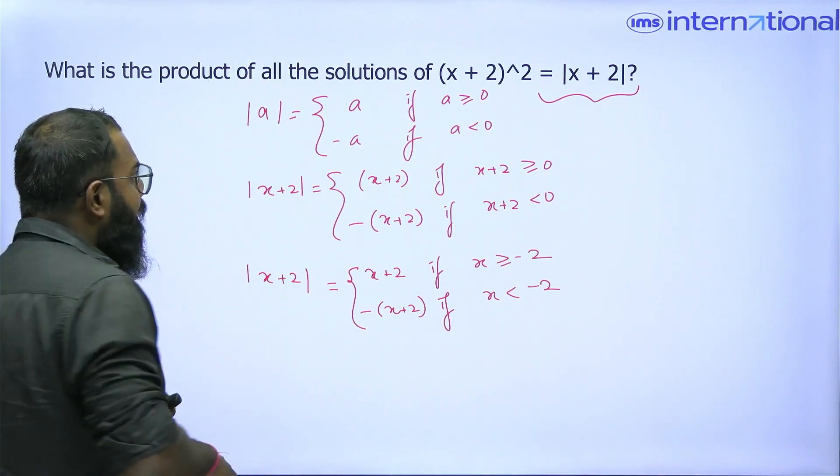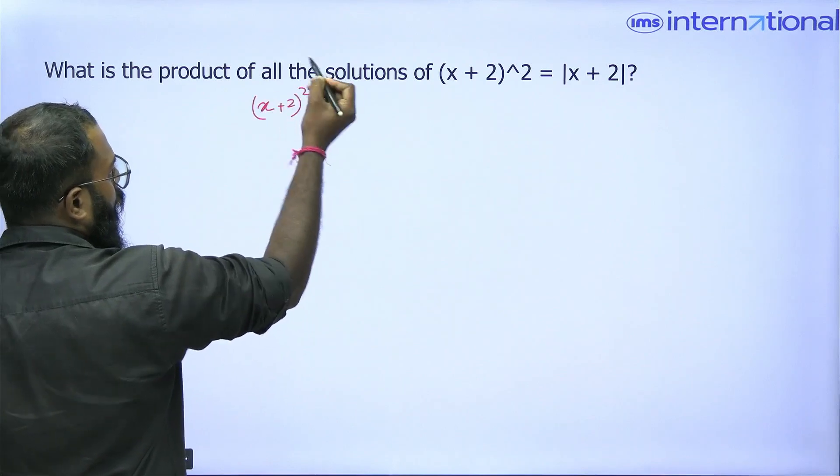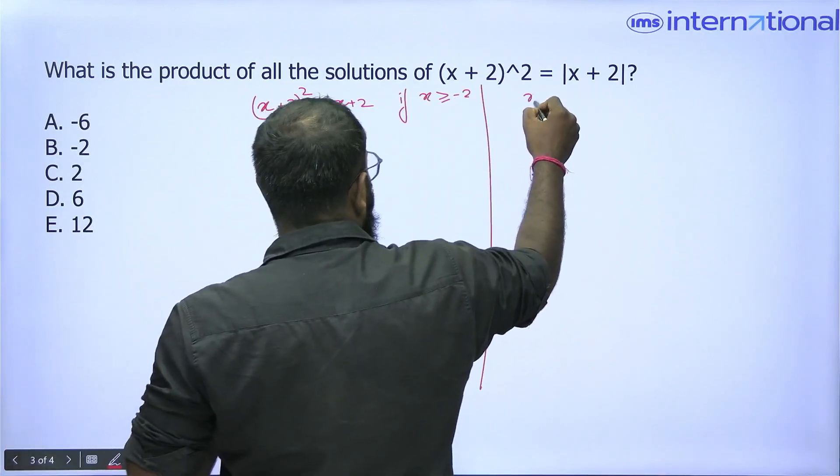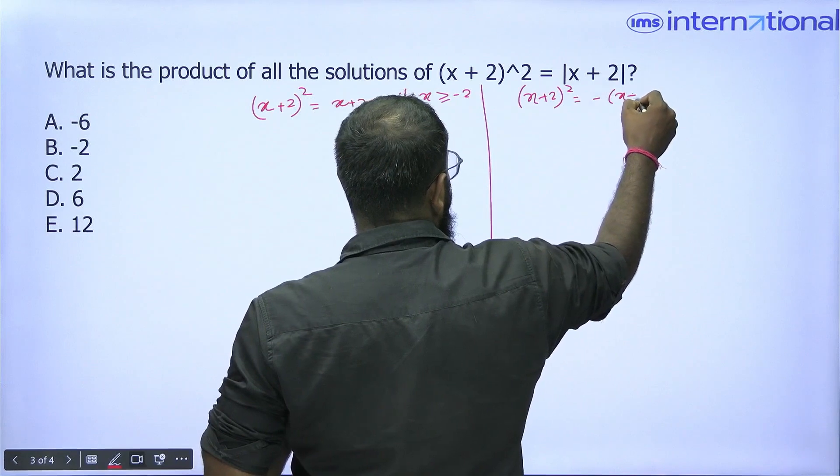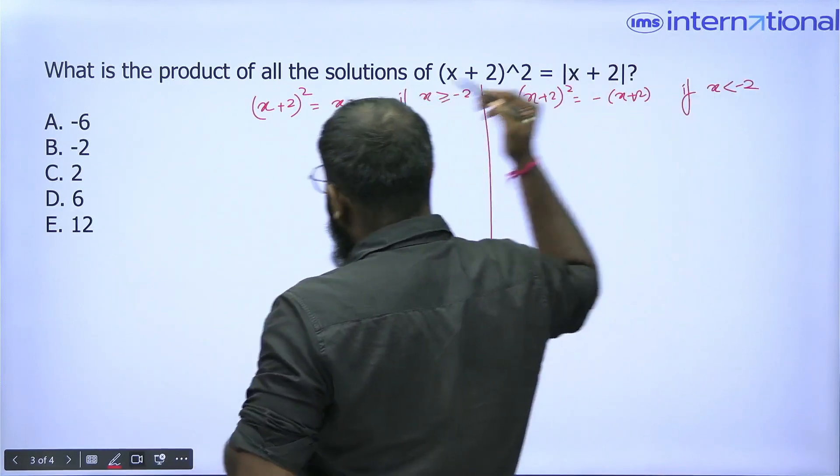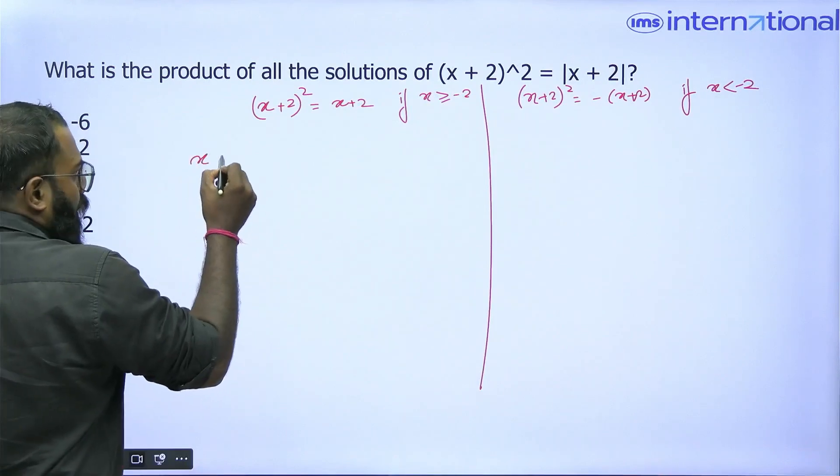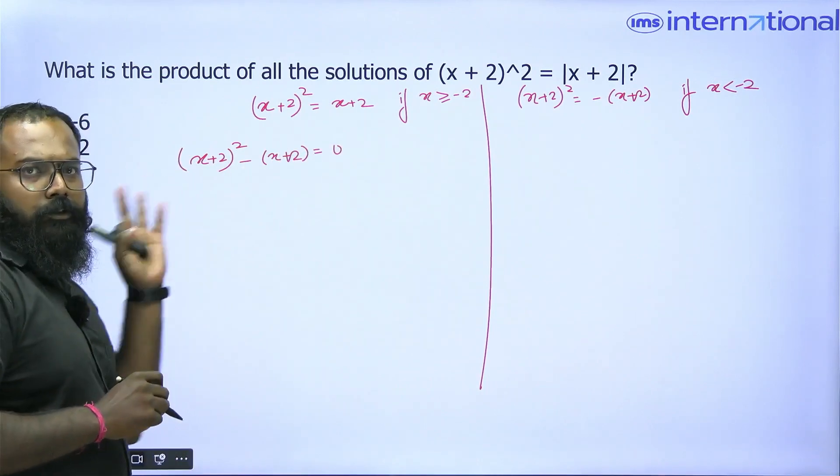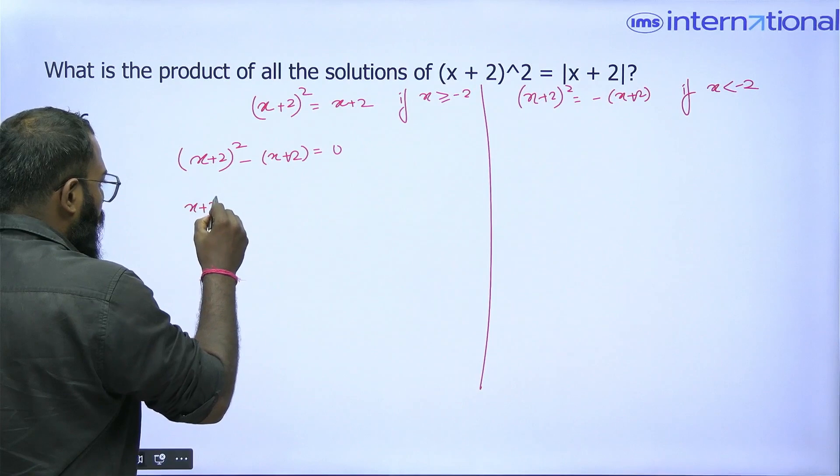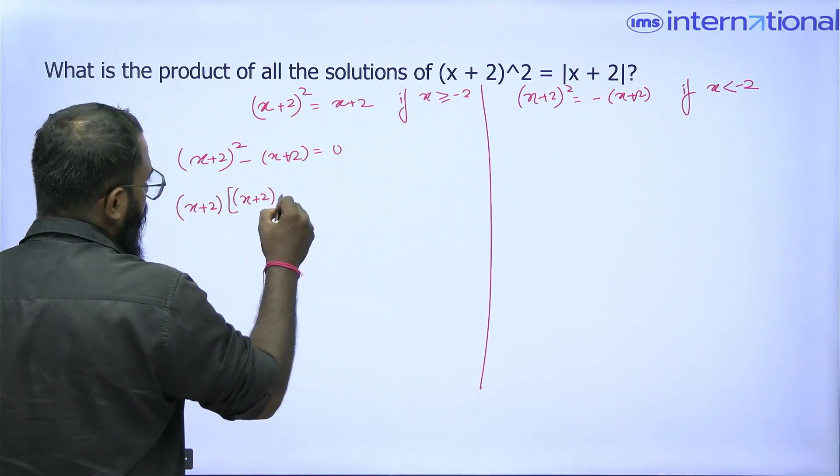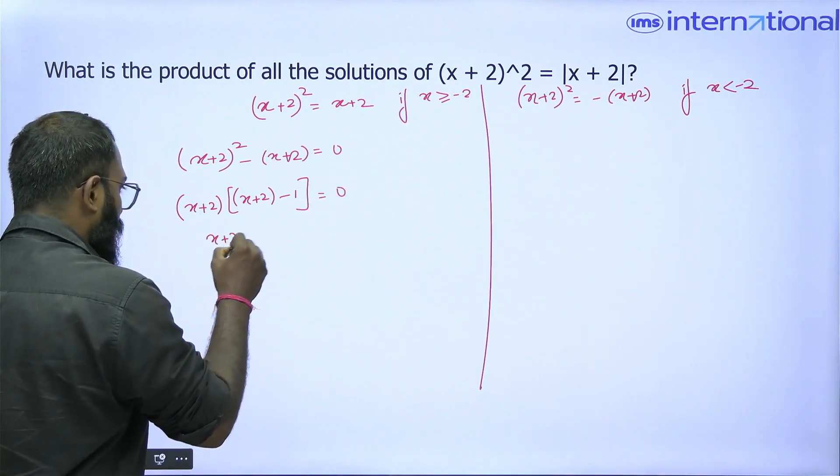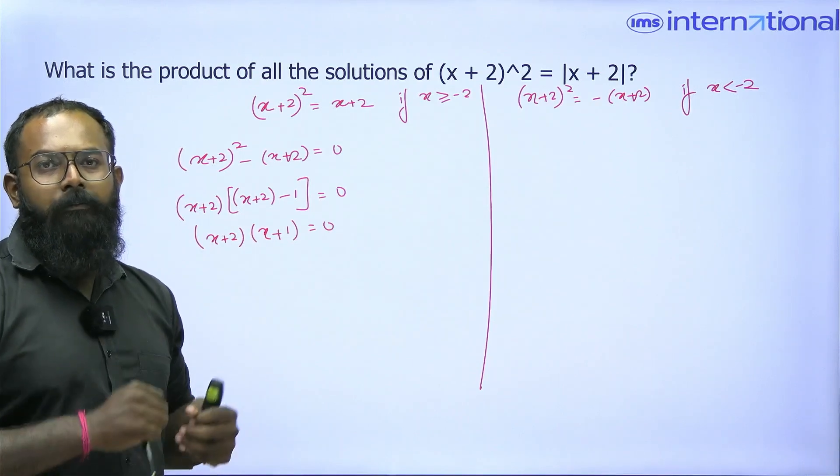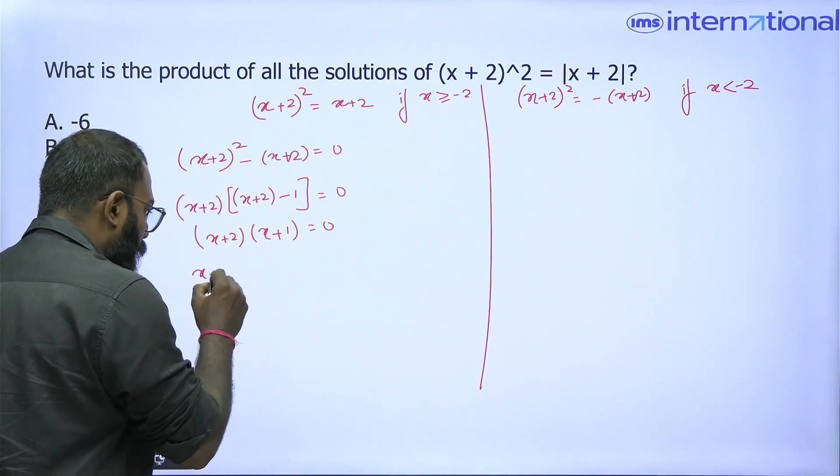Case 1: (x + 2)^2 = x + 2 if x is greater than or equal to -2. The second case is (x + 2)^2 = -(x + 2) if x is less than -2. Let's take everything to the left hand side: (x + 2)^2 - (x + 2) = 0. I can take x + 2 in common from both the terms, and I will be left with (x + 2)(x + 1) = 0. Product of 2 numbers is 0, that means at least one of them is 0.